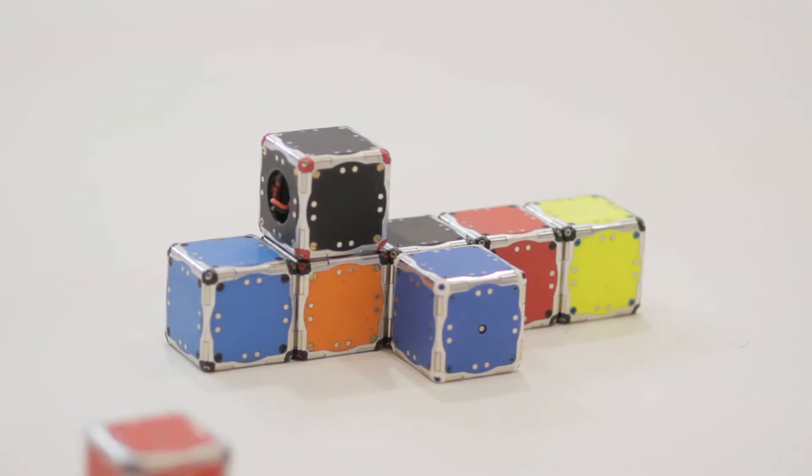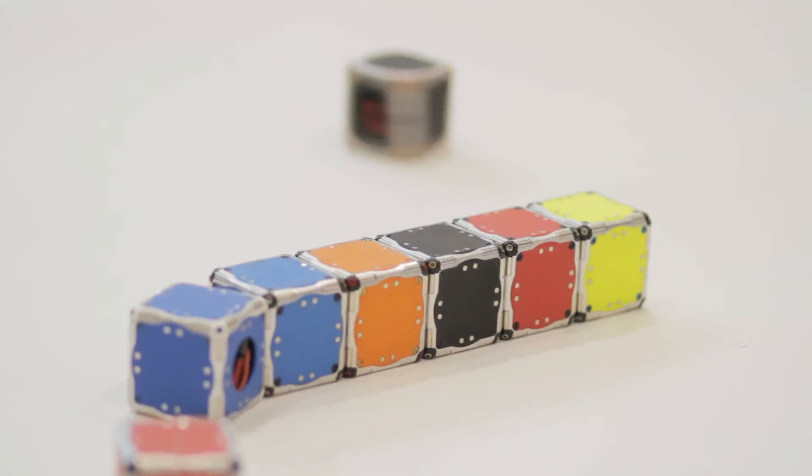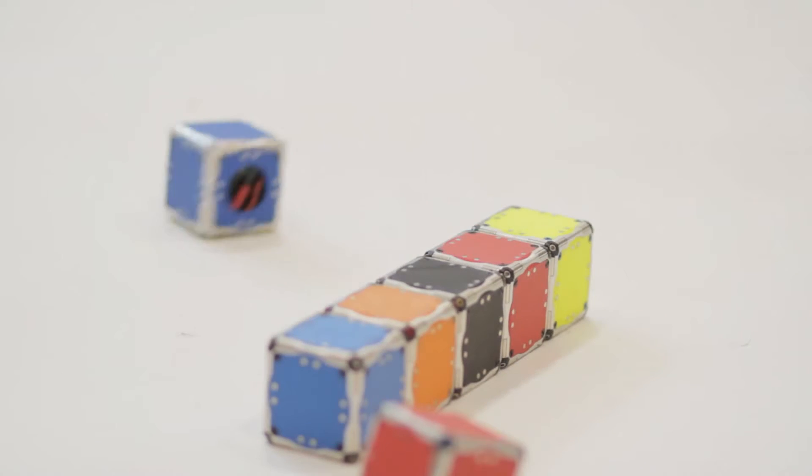Essentially what that means is there is a spinning mass inside the robot. When we want the robot to move, it stops that spinning mass, which takes that motion from the mass and applies it to the robot.